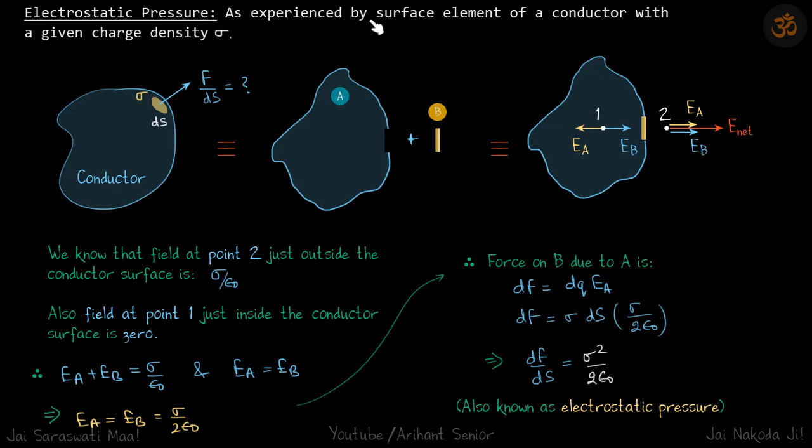This is the pressure experienced by a surface element of a conductor with the given charge density sigma. Obviously, on a conductor the charge density can vary at different points, so the pressure will also vary. But for symmetric elements like a conducting sphere or conducting plate, the electrostatic pressure is uniform.